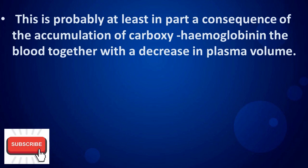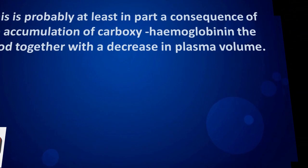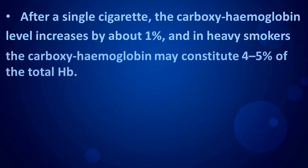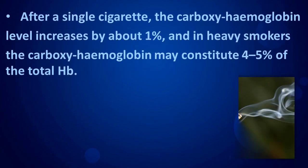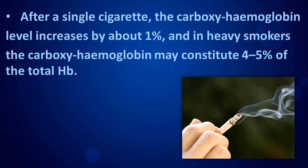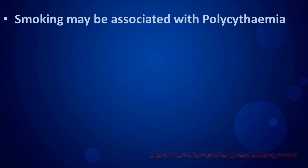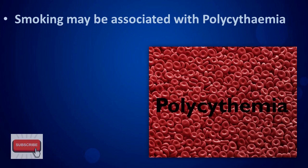This is probably at least in part a consequence of the accumulation of carboxyhemoglobin in the blood, together with a decrease in plasma volume. After a single cigarette, the carboxyhemoglobin level increases by about 1%, and in heavy smokers the carboxyhemoglobin may constitute 4 to 5% of the total hemoglobin. Smoking may be associated with polycythemia.